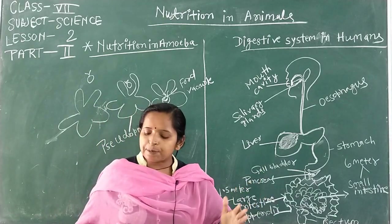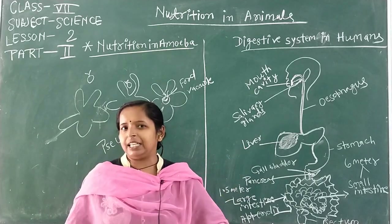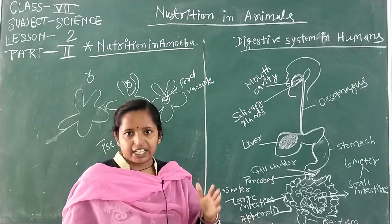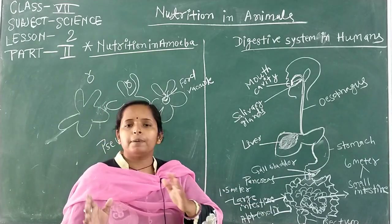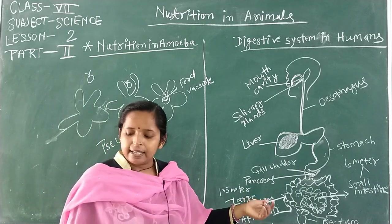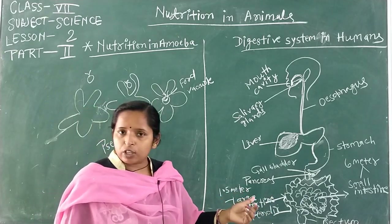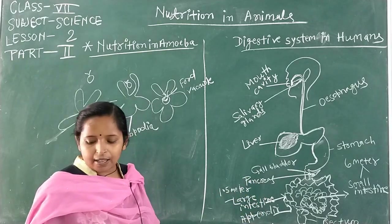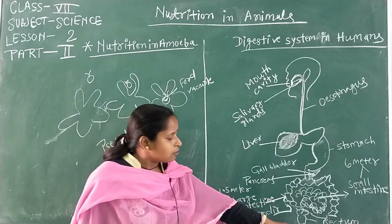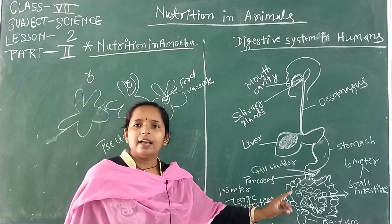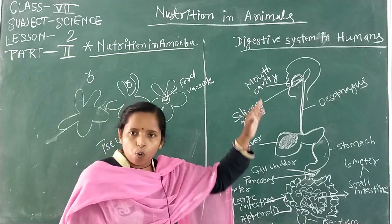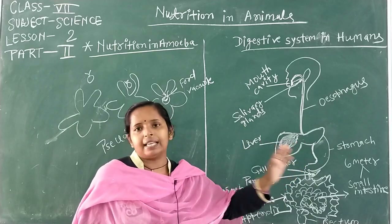The remaining waste material is transported to the rectum, which is also an organ of the digestive system. In the rectum, waste is stored as semi-solid feces. The fecal matter is then passed out through the anus, through which waste materials are removed from our body.